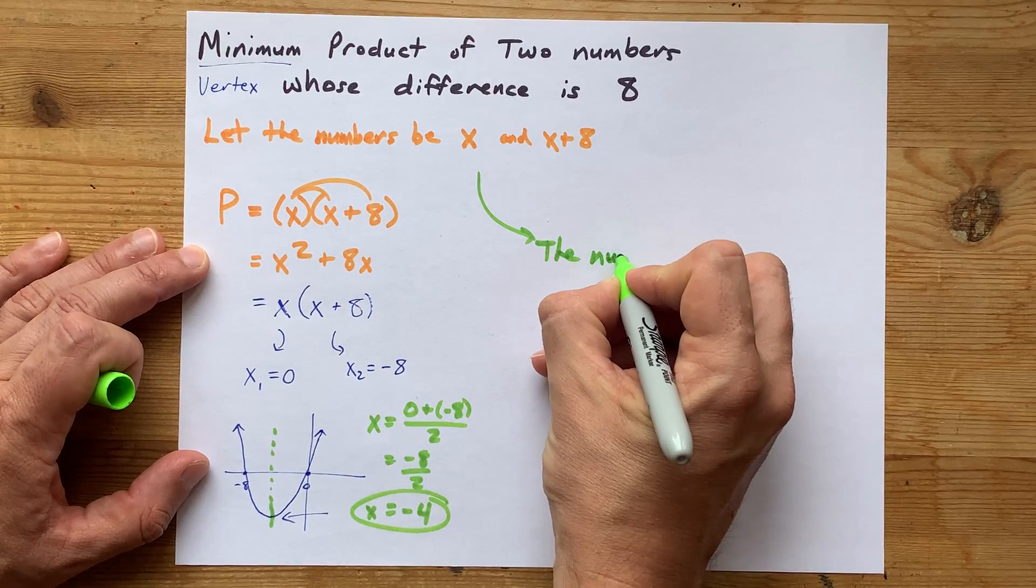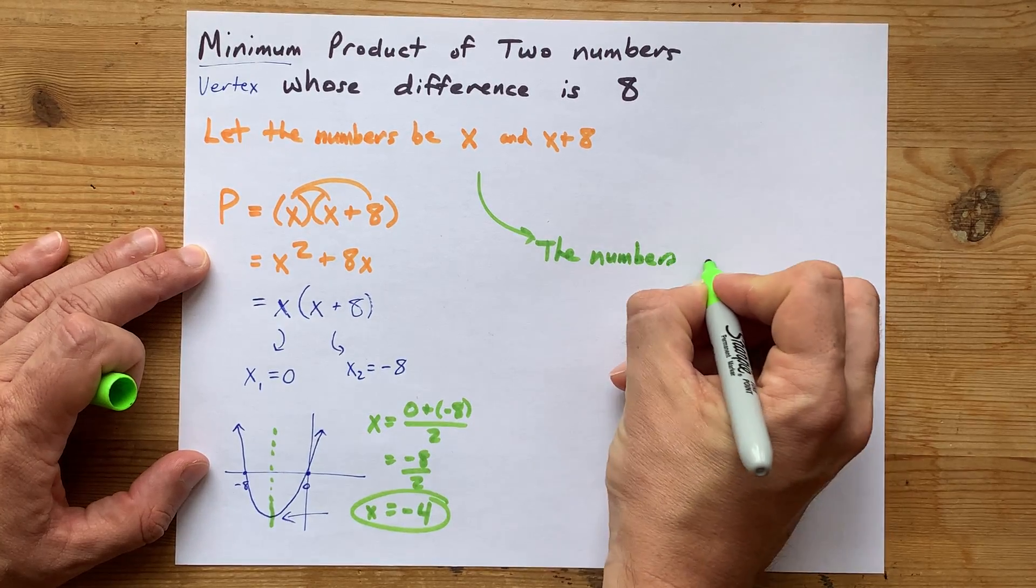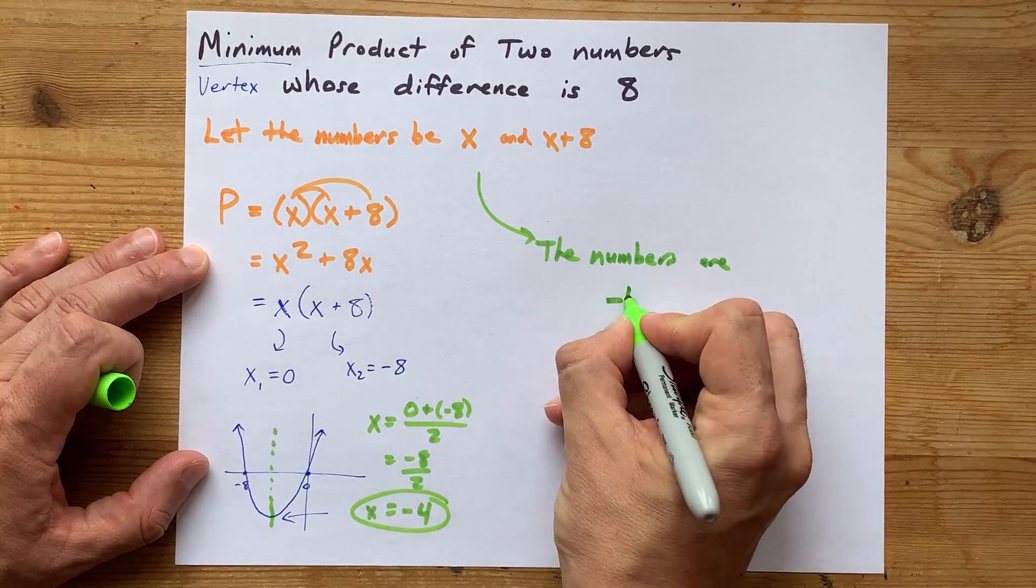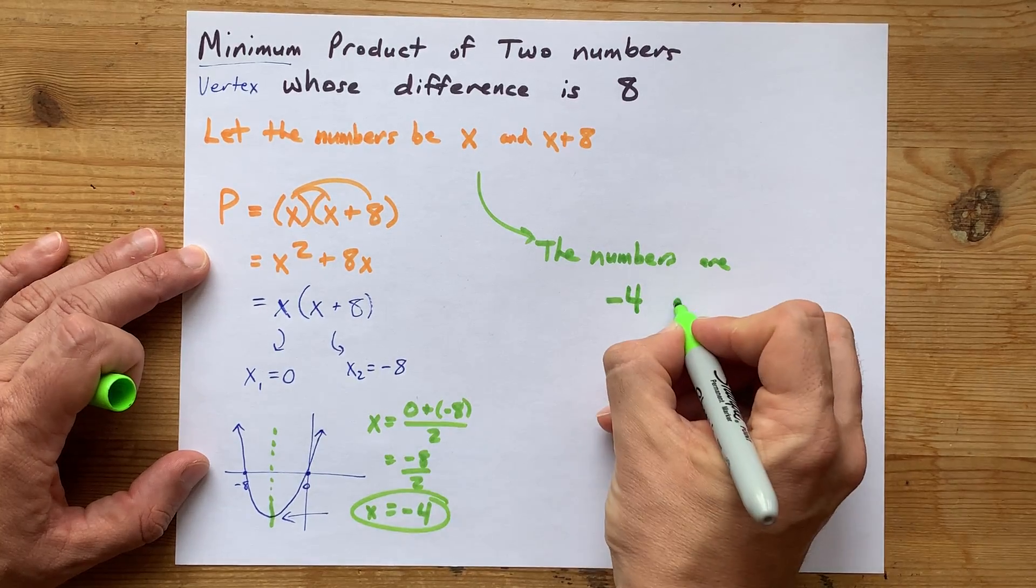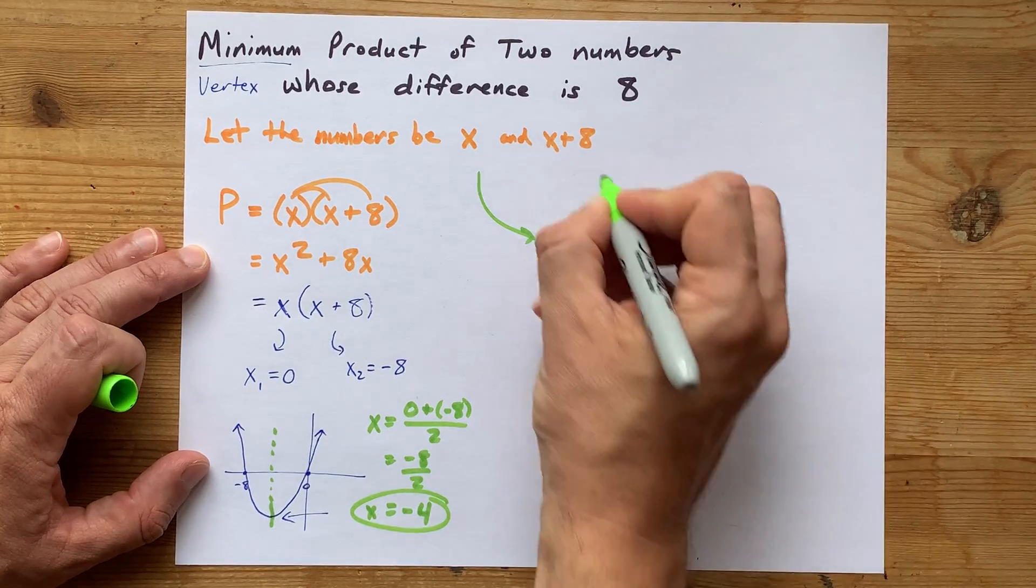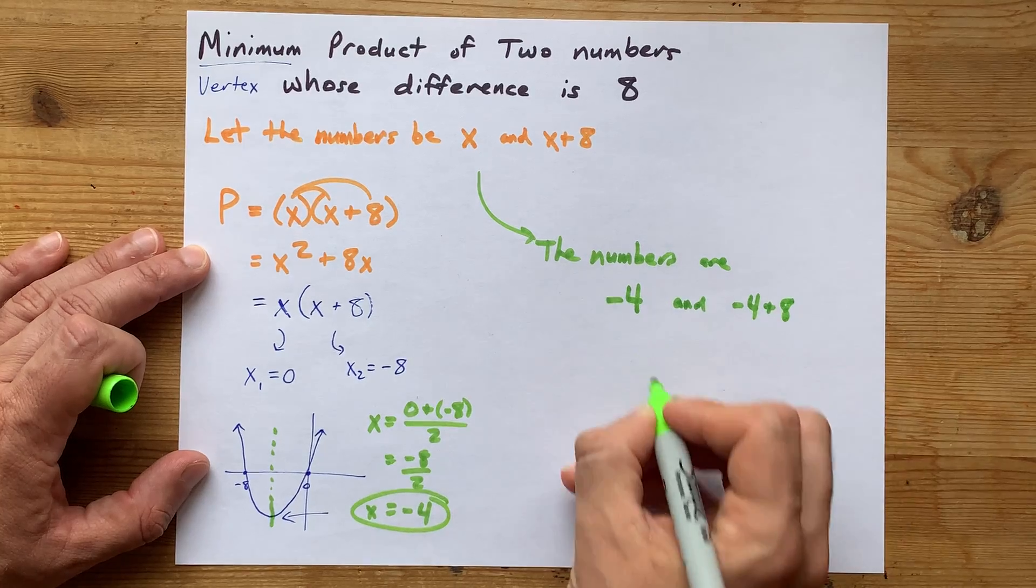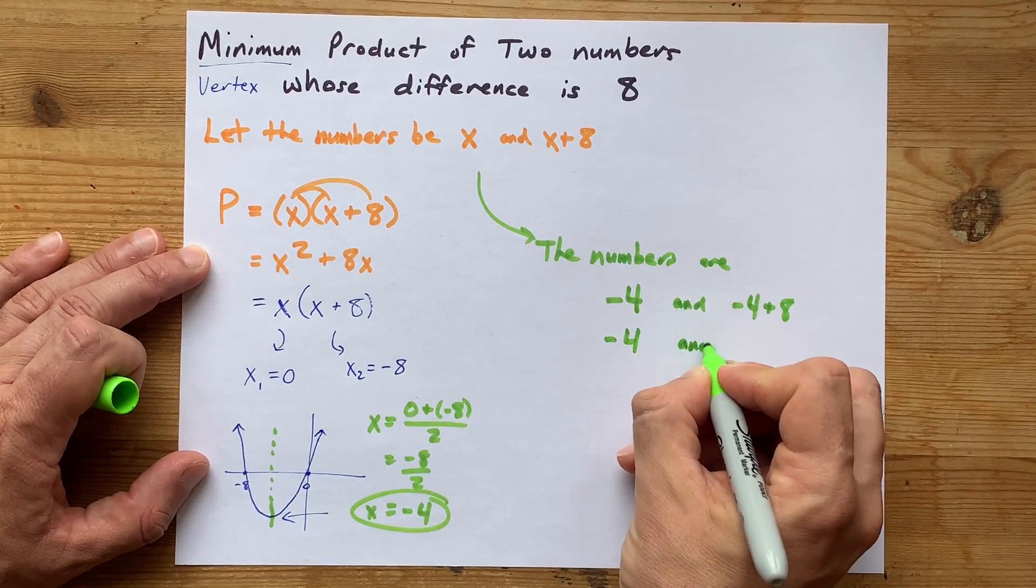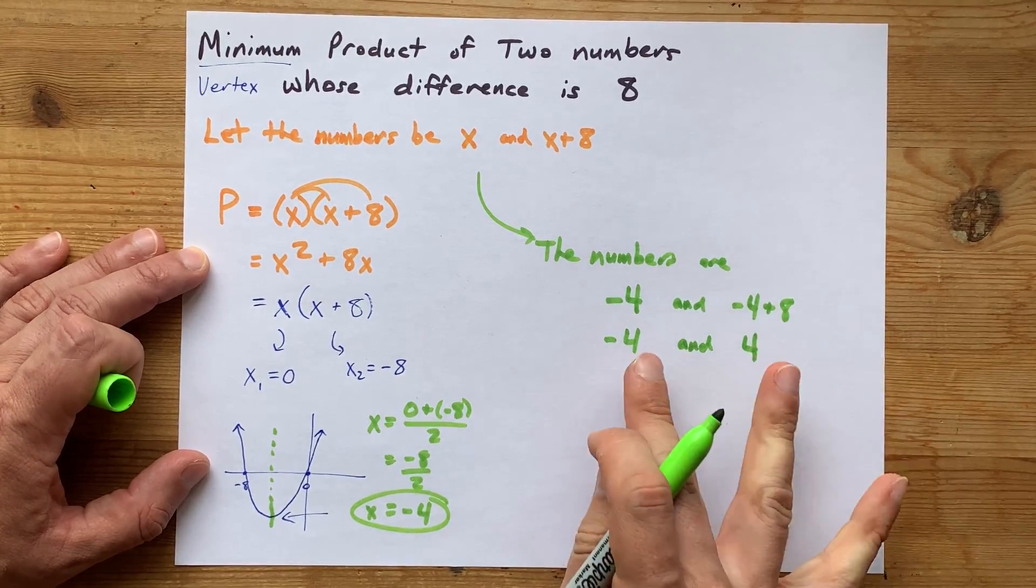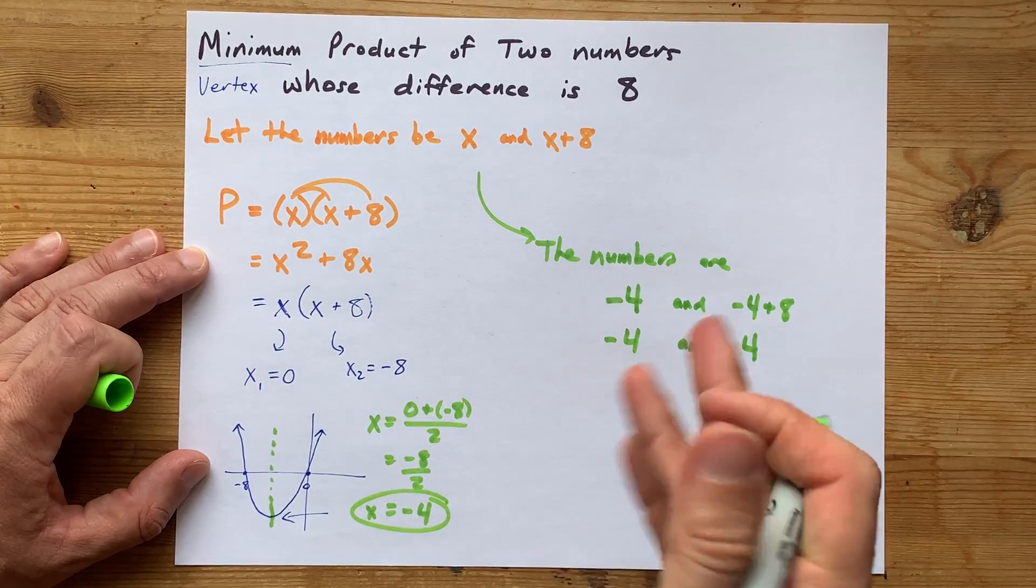that means the numbers themselves are, well, negative 4 for x, and then whatever negative 4 plus 8 is. That's negative 4 and positive 4. So, those two numbers differ by 8, yes.